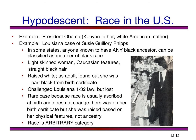A famous case of hypodescent in the United States involves President Obama, who has a Kenyan father and a white American mother but is classified as black or African American. There is also the case of Susie Guillory Phipps in Louisiana, where anyone known to have any black ancestor can be classified as black. Phipps was a light-skinned woman with Caucasian features who was raised white, but discovered she was part black from her birth certificate. She challenged Louisiana's 1/32 law but lost. This proves that race is an arbitrary category we create culturally — that is why we say race is a social construct.